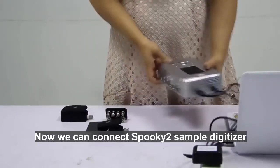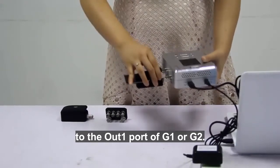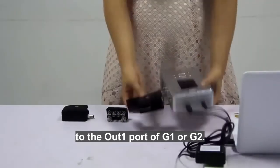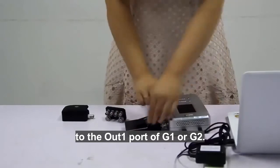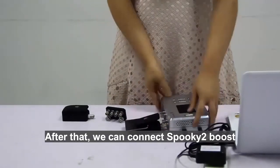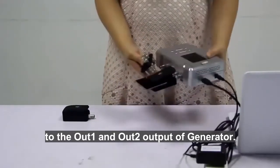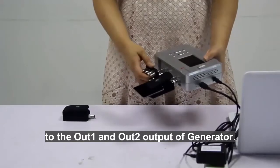Now we can connect Spooky2 Sample Digitizer to the Out 1 port of G1 or G2. We connect it to G1. After that, we can connect Spooky2 Boost to the Out 1 and Out 2 output of the generator.